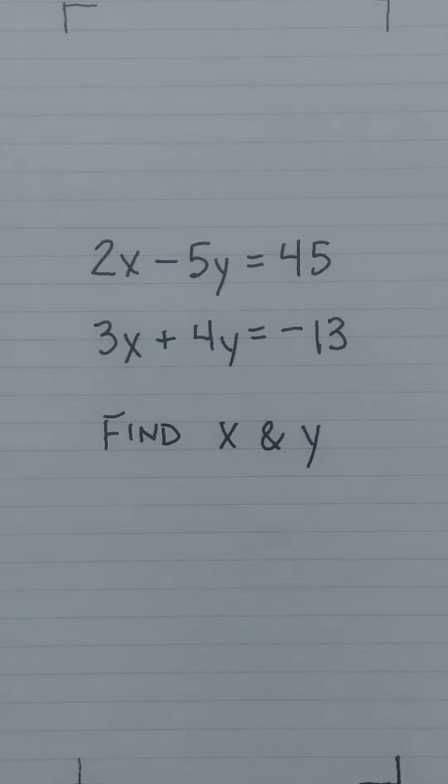Alright, let's solve this system of equations, or you can also call it a simultaneous equation problem. 2x minus 5y equals 45. 3x plus 4y equals negative 13. Find x and y.